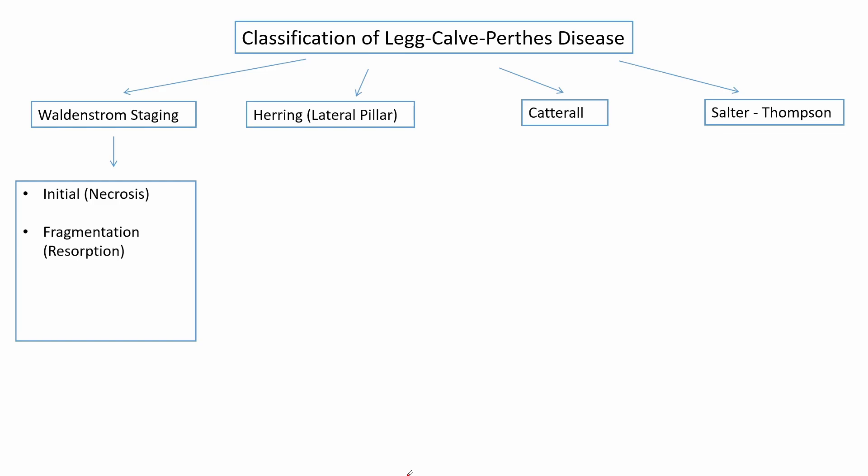This is followed by the second stage, which is the fragmentation stage, in which the body resorbs the necrotic tissue. The third stage is the reossification stage, in which the body, through osteoblasts, tries to create new bone in the area where the bone has been resorbed.